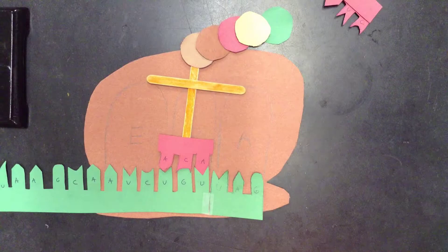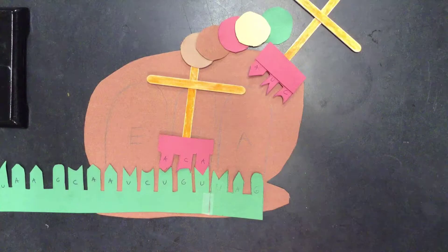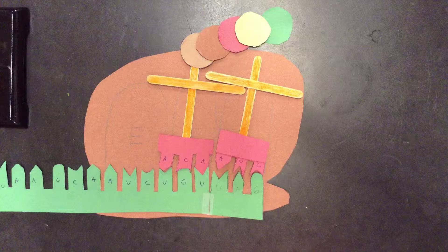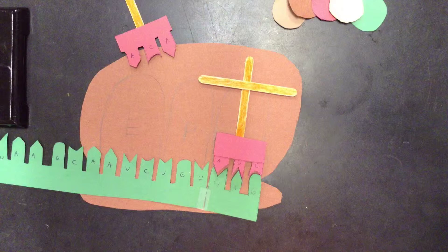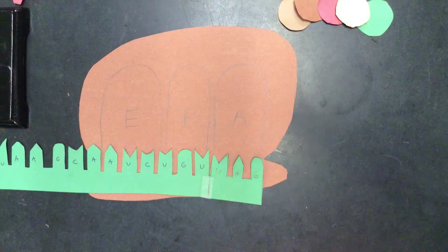There's a tRNA molecule with a stop anticodon, and that bonds to the codon on the mRNA. This causes the polypeptide chain to detach and also the tRNA to detach. The amino acid chain goes and becomes a protein.